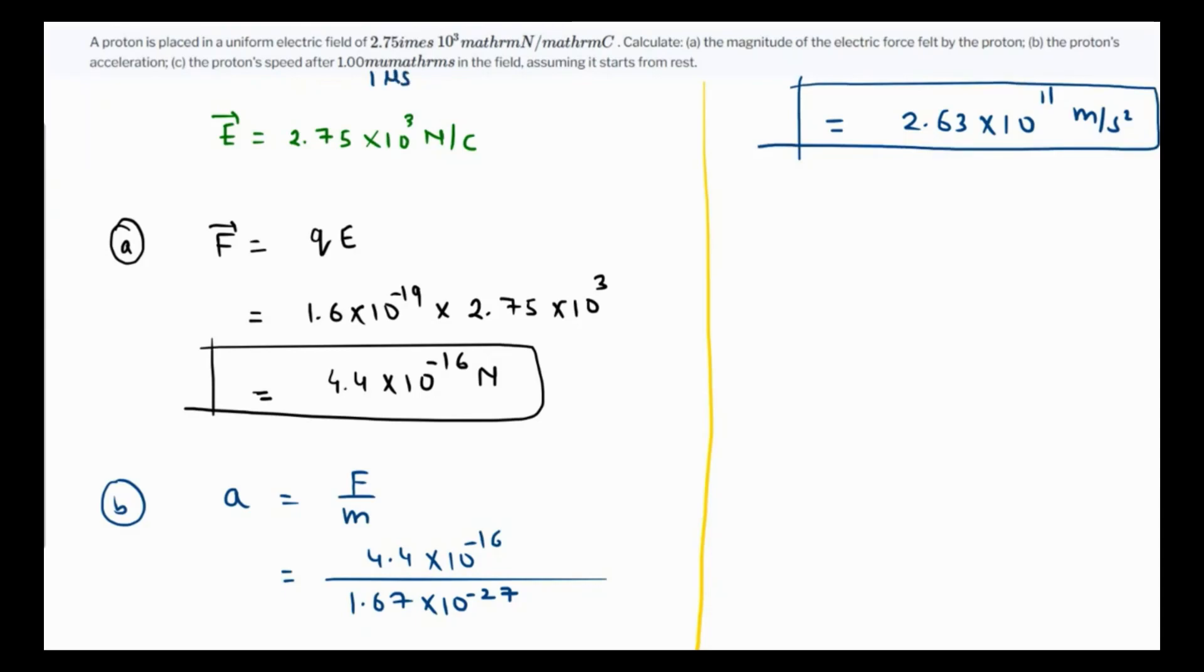Assuming it starts from rest, so we can use the first equation of motion: v equals v naught plus at. It starts from rest, so v naught is zero.